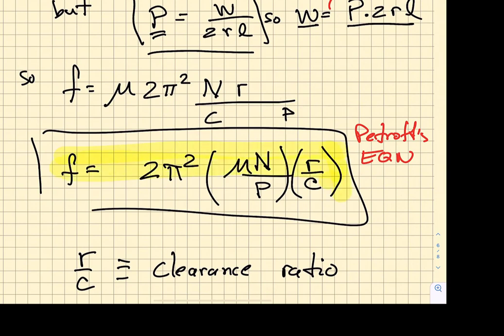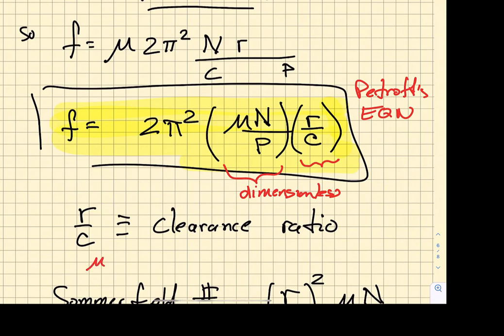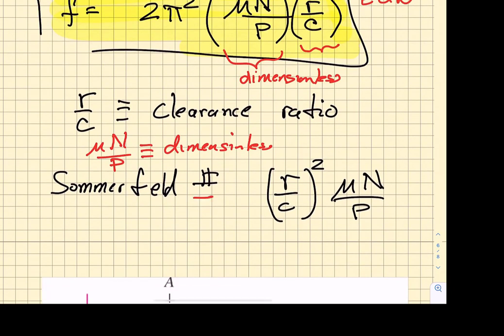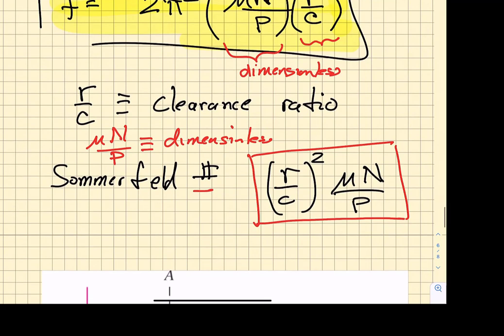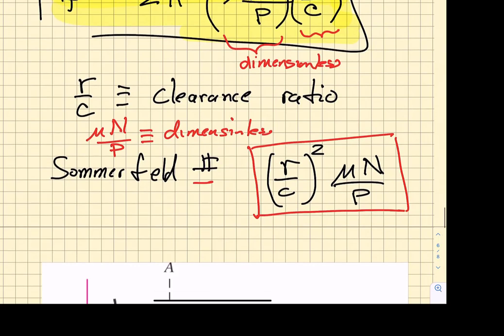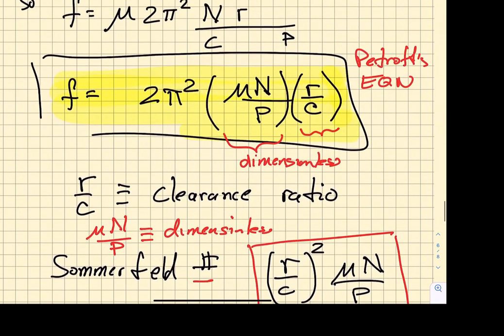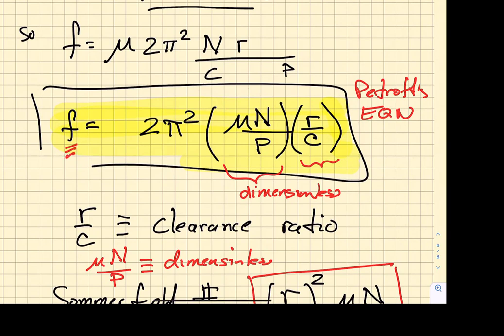This is called Petrov's equation. So we have two dimensionless groups in here. We have a clearance ratio, which is the ratio of the shaft radius to the clearance that we have specified in the joint. We have a dynamic viscosity times a rotational speed divided by the pressure, and each of these groups is dimensionless. So the clearance ratio is dimensionless, and the dynamic viscosity times n over p is also dimensionless. Sommerfeld decided to write a dimensionless group as shown right here. That number will show up again when we look at charts to help us decide what sort of pressures, what sort of clearances, what sort of heat generation flow rate are required for journal bearings.